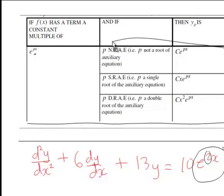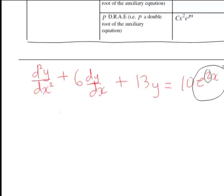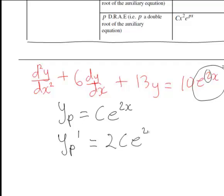Therefore yp will be in this form here. It will have the form C e to the px, which in this case will be C e to the 2x. And once we have found this, because that should satisfy this DE, we then differentiate this twice. So yp dashed here is going to be 2C e to the 2x. And the second derivative yp double dashed is going to become 4C e to the 2x.